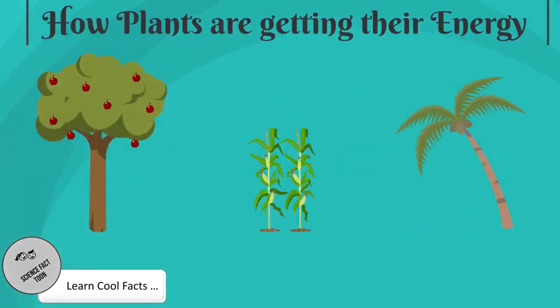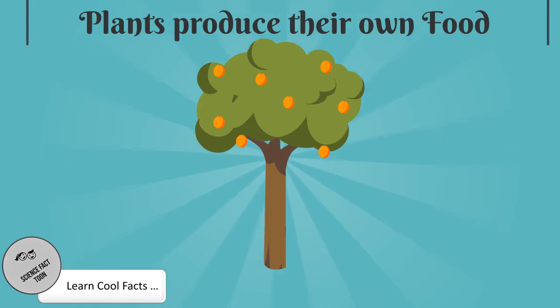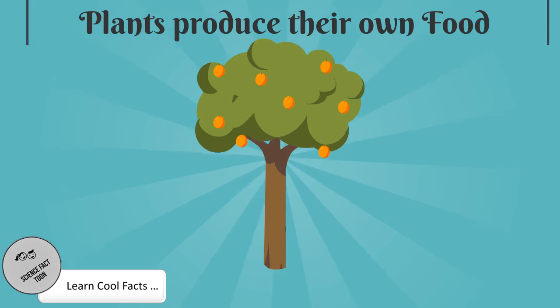We saw that animals depend on plants for food, but how do plants produce their own energy? Except for a few carnivorous plants, the majority of the plant kingdom produce their own food. Yes, plants are not dependent on other creatures — instead they produce their own energy.